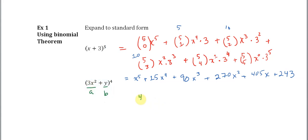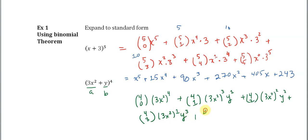So when we expand this out, it's going to be 4 choose 0, 3x squared to the 4th, y to the 0th, plus 4 choose 1, 3x squared to the 3rd, y to the 1st, plus 4 choose 2, 3x squared to the 2nd, y to the 2nd, plus 4 choose 3, 3x squared to the 1st, y to the 3rd, and then finally 4 choose 4, 3x squared to the 0th, y to the 4th.